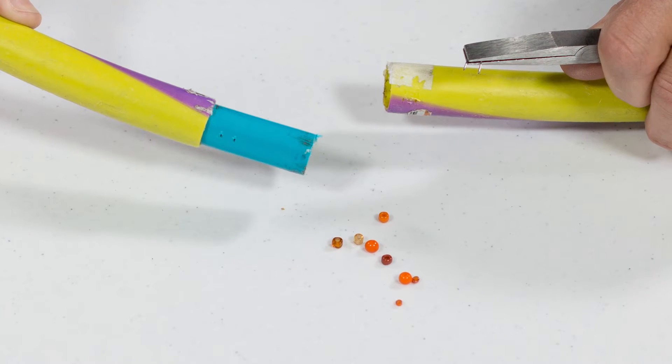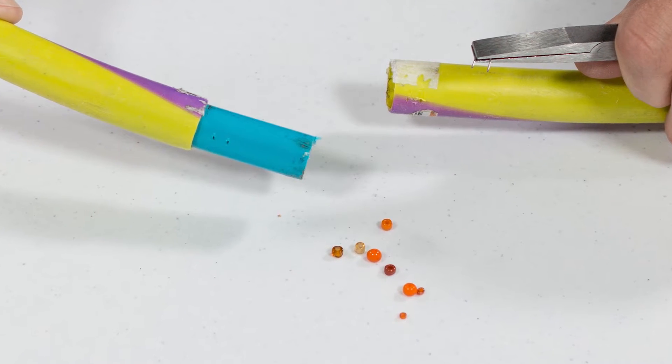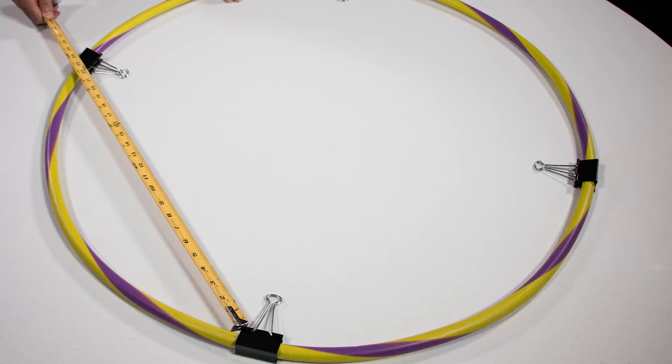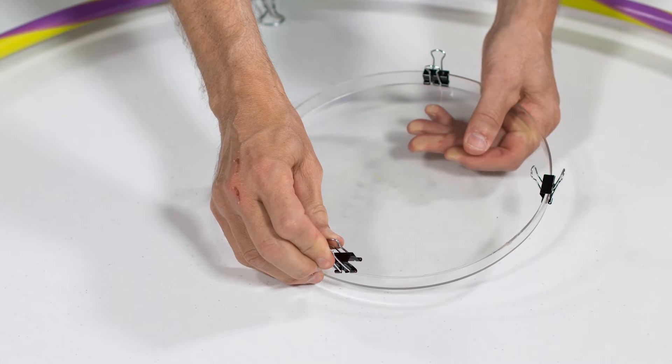Get the ball bearings out of your hula hoop. Put the big binder clips on the hula hoop. Put the small binder clips on the clock lens.